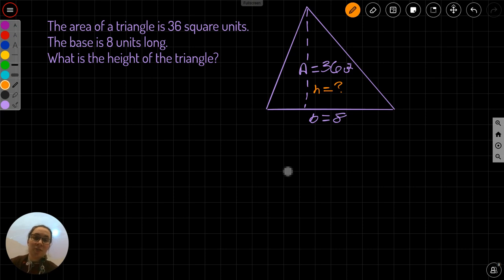So to do this, we need first the formula for area of a triangle, which we know is A equals 1 half times base times height.